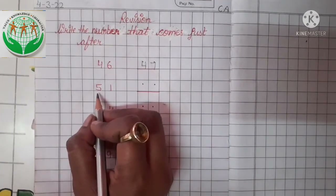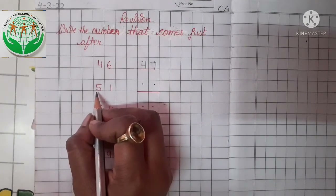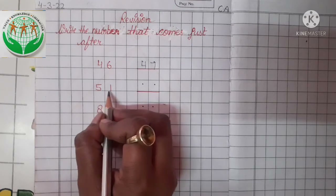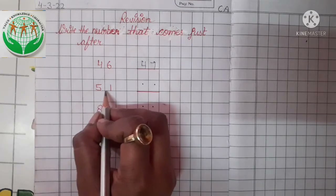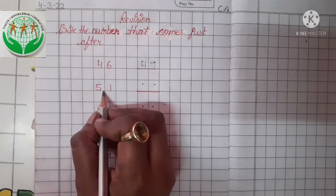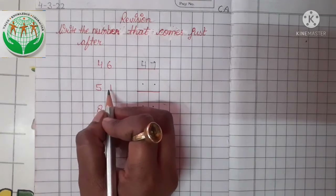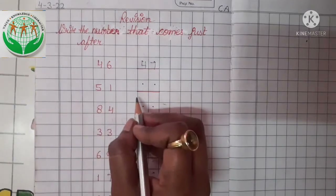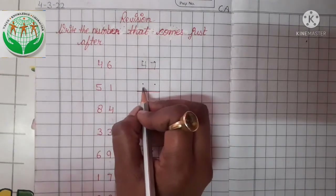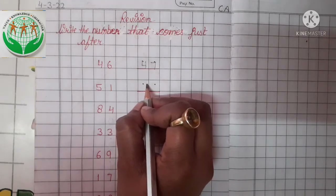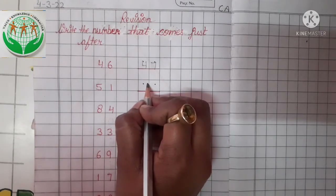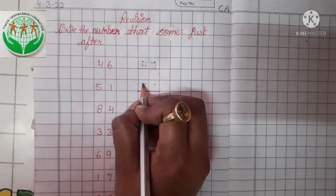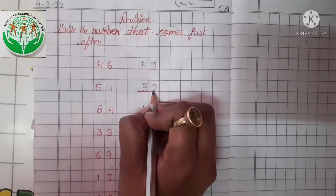Now come to the next one. Recognize this number? Yes, this is number 51. Now tell me, what comes just after 51? 51 ke after kya aega? Very good class — 52. So we write here number 52.